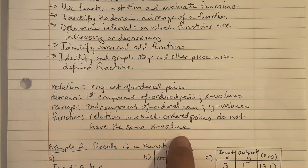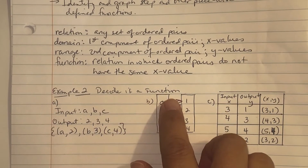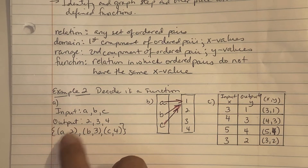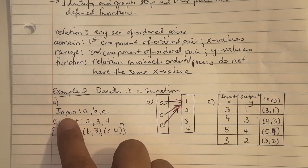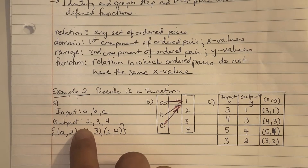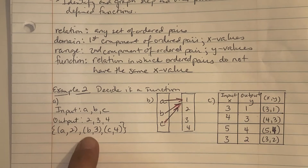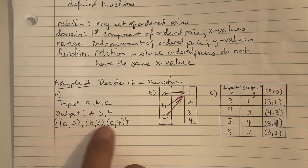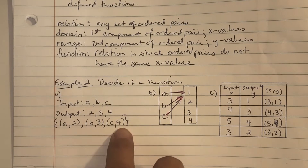In example 2a, decide if it's a function. They gave it to us as an input/output situation. The input values are a, b, c — input is the same as the domain. The outputs are two, three, four — the same as the range. We created ordered pairs: a with two, b with three, c with four. Since every input does not repeat, this is a function.